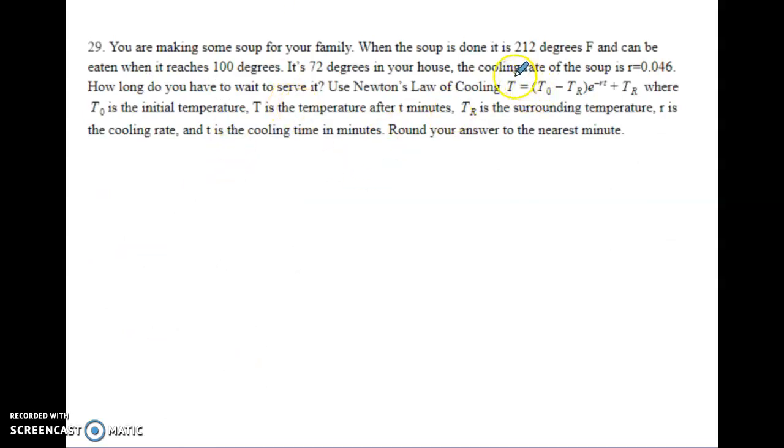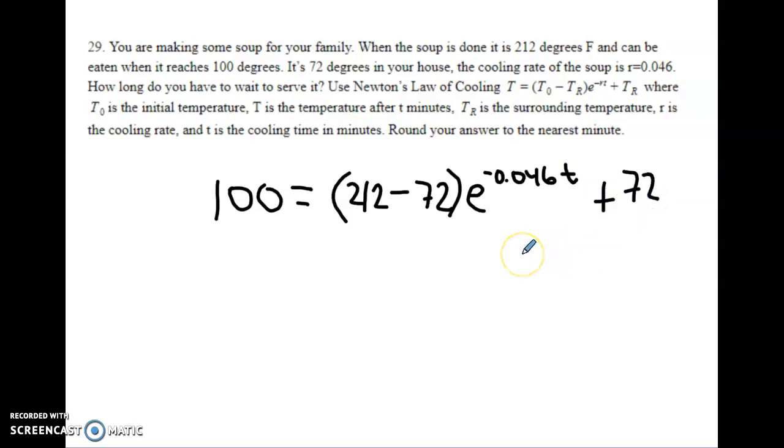Number 29. We are going to use this equation right here, Newton's Law of Cooling. The first T is the temperature that you want. So, you want it to reach 100 degrees, because at 100 degrees, it's not going to burn your tongue. And then, the initial one, so that's the hottest that it was, so it was 212. And then, we minus the temperature of the room, which was 72. And, take that e to the negative R. That negative, be careful, because sometimes I forget that that is a negative right there. So, it's negative 0.046 times T. And, that's what we don't know. We don't know how long it's going to take, so that's going to be our unknown. And then, we add 72 in to that last T_R.